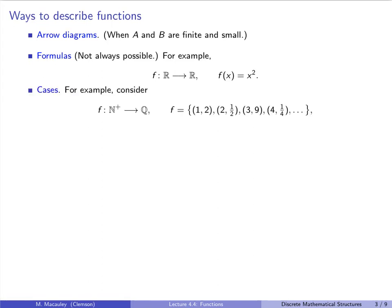Sometimes it's convenient to use cases to describe a function. Consider F from the non-zero integers to the rationals, given by F(1) = 2, F(2) = 1/2, F(3) = 9, F(4) = 1/4. Assuming this pattern continues, this can be written as F(x) = x² if x is odd, and 1/x if x is even.